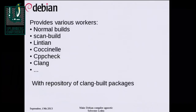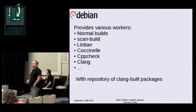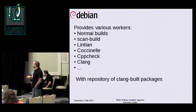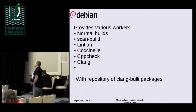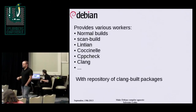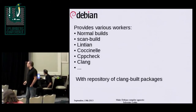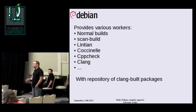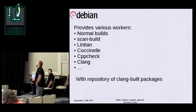The idea is: if I'm an upstream developer and I want feedback on the quality of my package, I go to this interface and I have the log of my package built with two compilers and tons of checks. So I'll have plenty of things to fix. We provide the normal Debian vanilla build with GCC, we do scan-build, Jan Cooks, CppCheck, and Clang. We also provide an automatic repository with packages built with Clang.